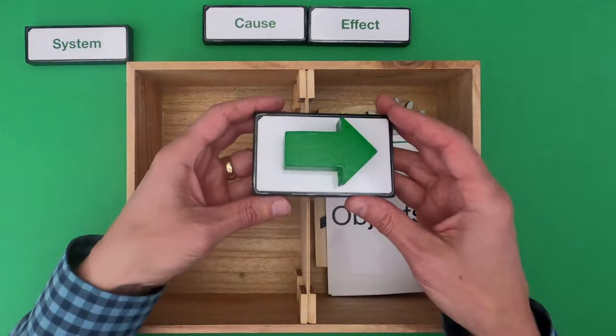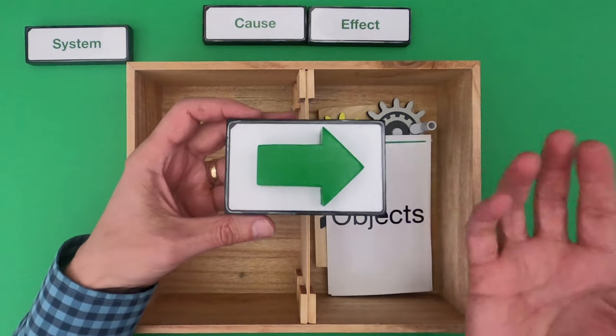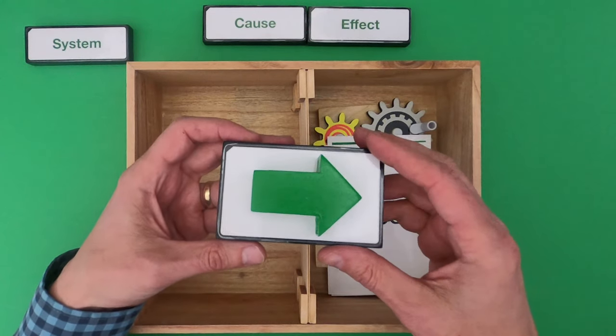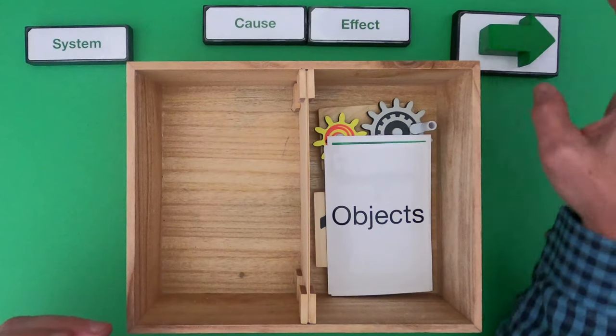The object that represents cause and effect is a green arrow. And the reason why is that in science we try to identify what's an effect and then we work backwards to figure out what's causing it. And what happens first is really important in determining what's cause and what's effect.